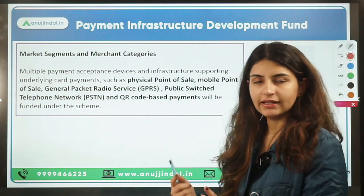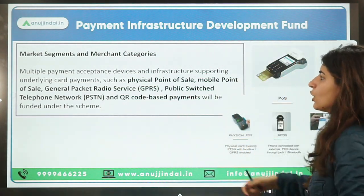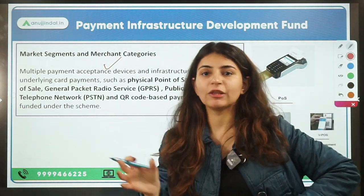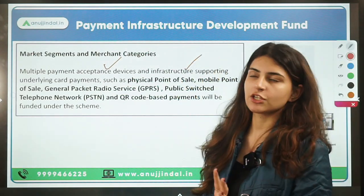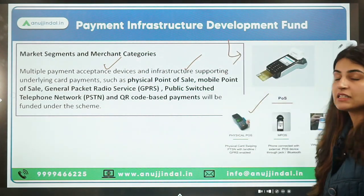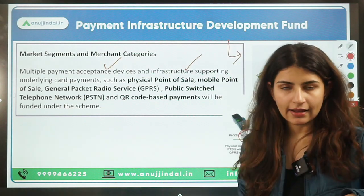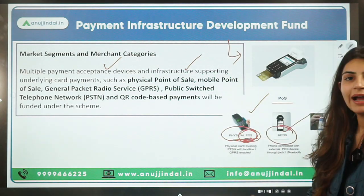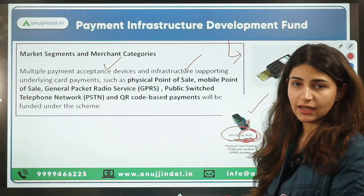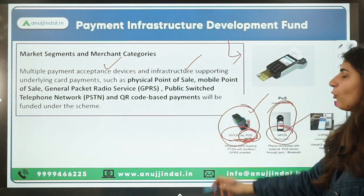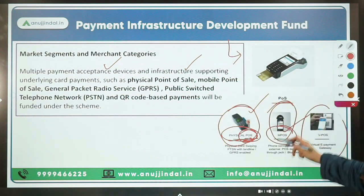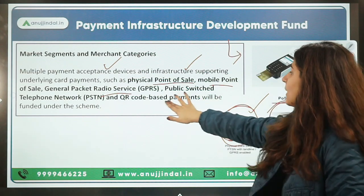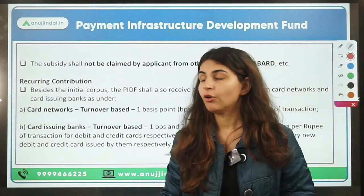The payment acceptance devices covered under this fund include: Physical Point of Sale (card swiping machines), Mobile Point of Sale (mobile used as a POS device), General Packet Radio Service-based devices, and QR-based payment systems. All these are part of the infrastructure supporting card and digital payments being promoted under the cashless economy initiative.